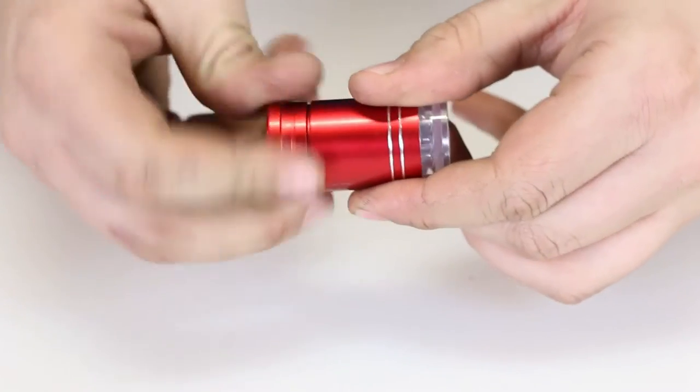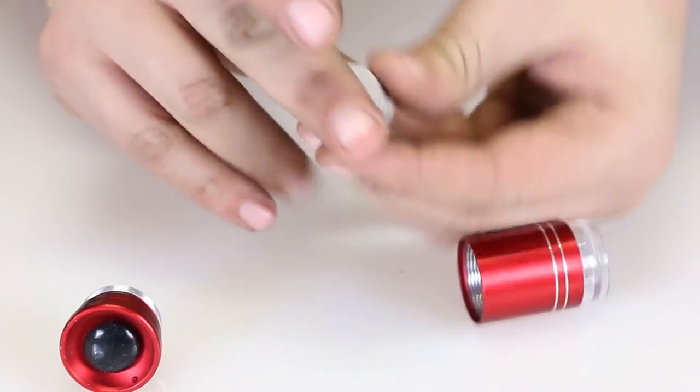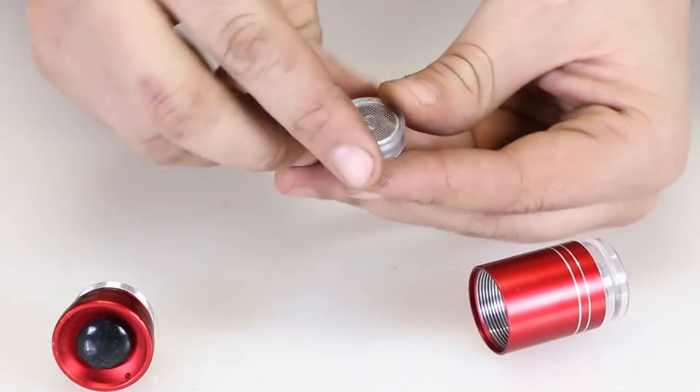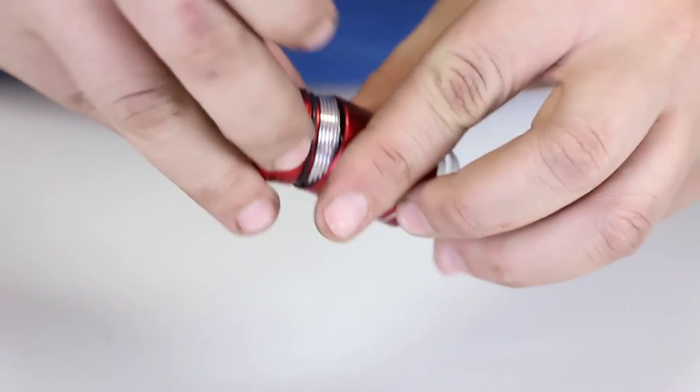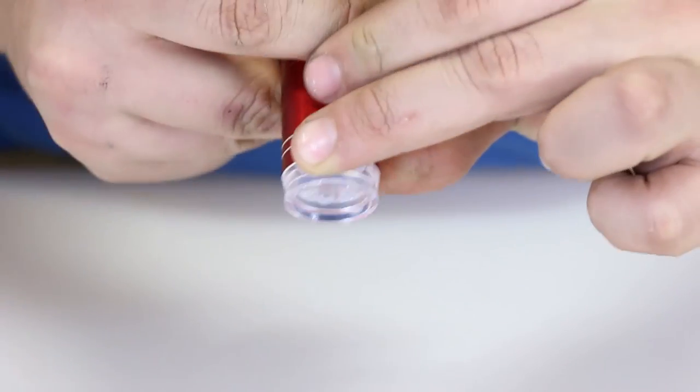To install the front light, begin by unscrewing the back cover on the light. Remove the film and place the battery back inside. Close the back cover and press the back button to test the light.